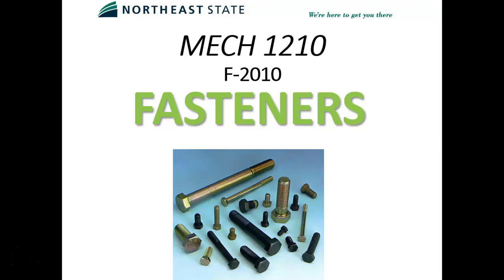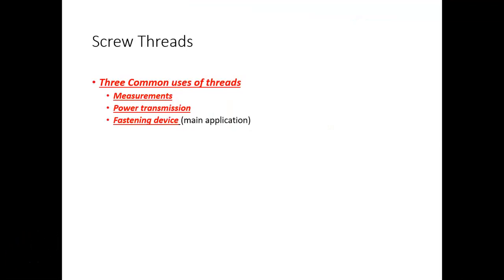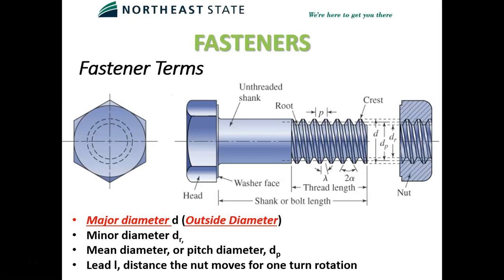Hello, mechanical transmissions class. This is Travis Blatso with another video lecture covering fasteners. Screw threads have three common uses: measurement, power transmission, or as a fastening device. In this lecture we'll focus on their use as a fastening device. For measurement, think of micrometers, which use threads internally. For power transmission, think of a C-clamp transmitting clamping force.